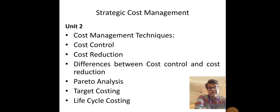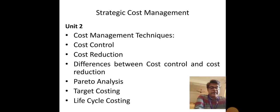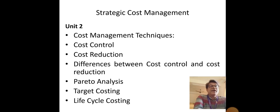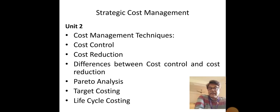For cost control, we have to set standards, measure actual performance, and compare the standards with actual performance. If there is any deviation, it can be reduced by applying some corrective measures. That process is called cost control. Now, the next topic is cost reduction.